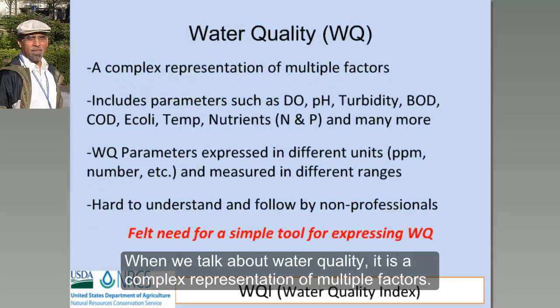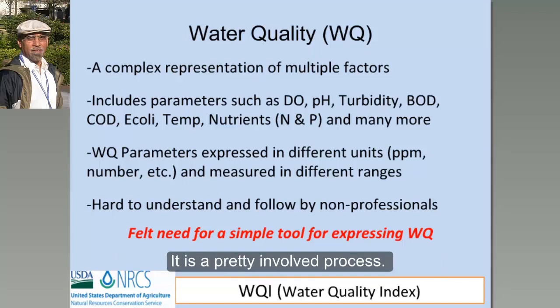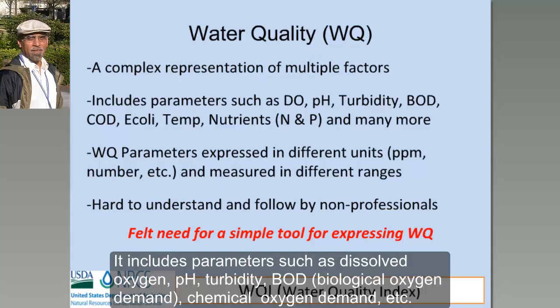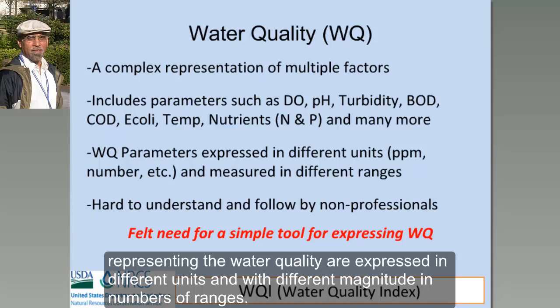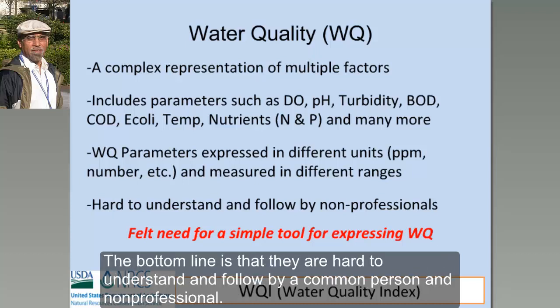When we talk about water quality, it is a complex representation of multiple factors. It's a pretty involved process and includes parameters such as dissolved oxygen, pH, turbidity, BOD (biological oxygen demand), chemical oxygen demand, and many more. The main challenge that motivated developing water quality indices was that all these parameters are expressed in different units and with different magnitudes and ranges. Bottom line, they are very hard to understand and follow by a common person or non-professional.